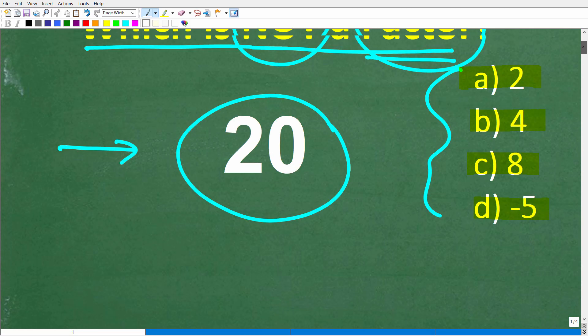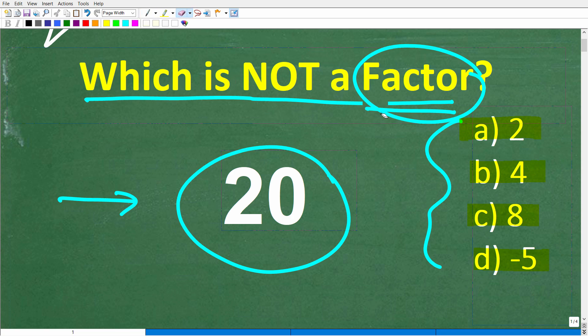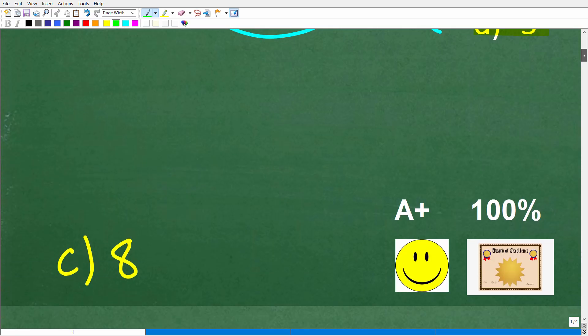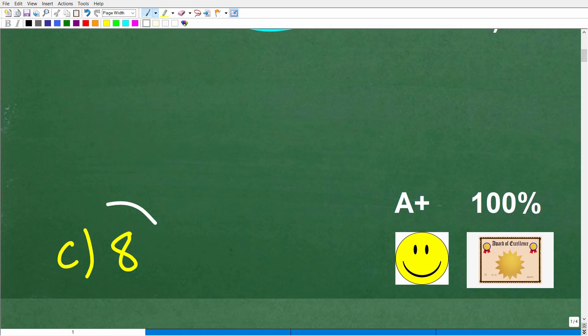All right, so one more time, pretty straightforward question here. You have to be careful though, because the question is which is not a factor of 20? Let's take a look at the answer. The correct answer to this question is C, 8. 8 is not a factor of 20.